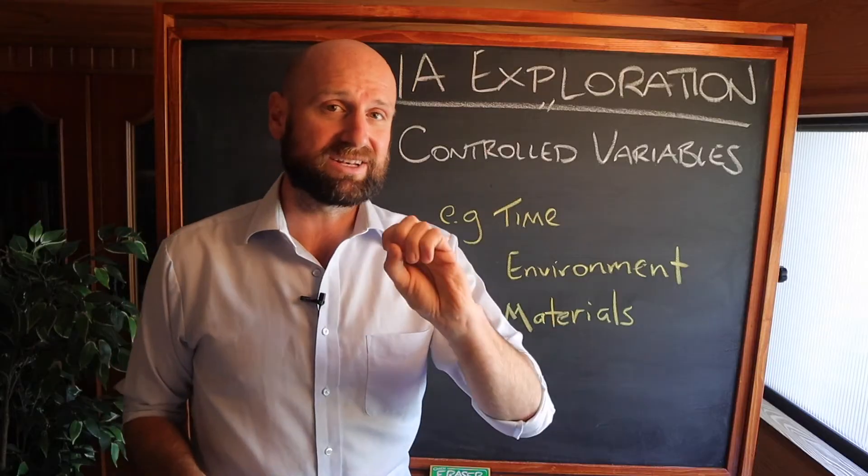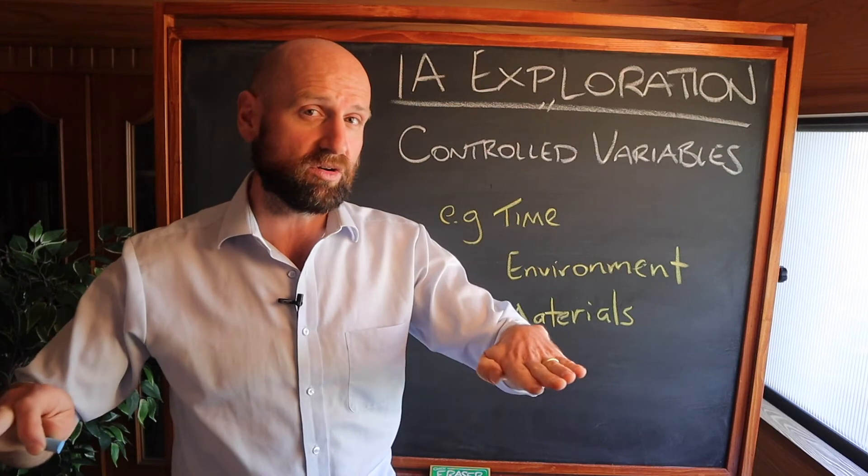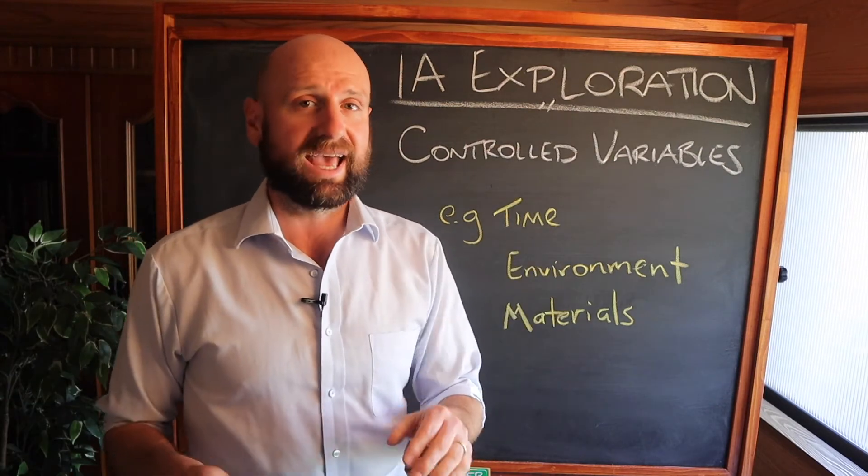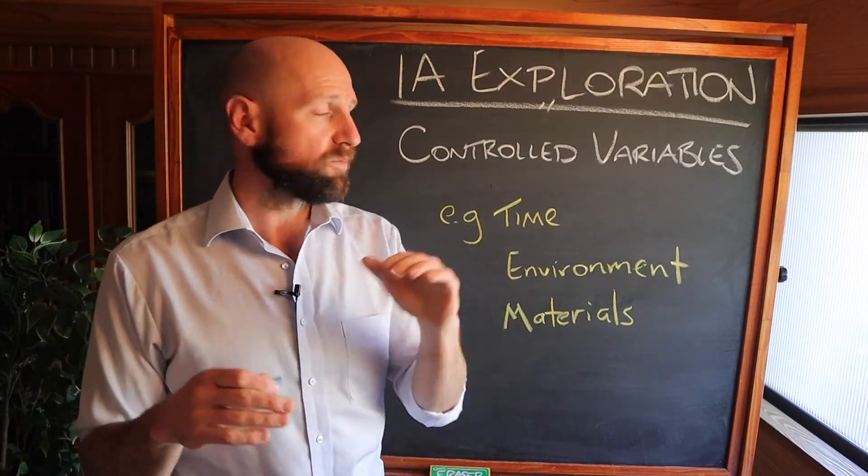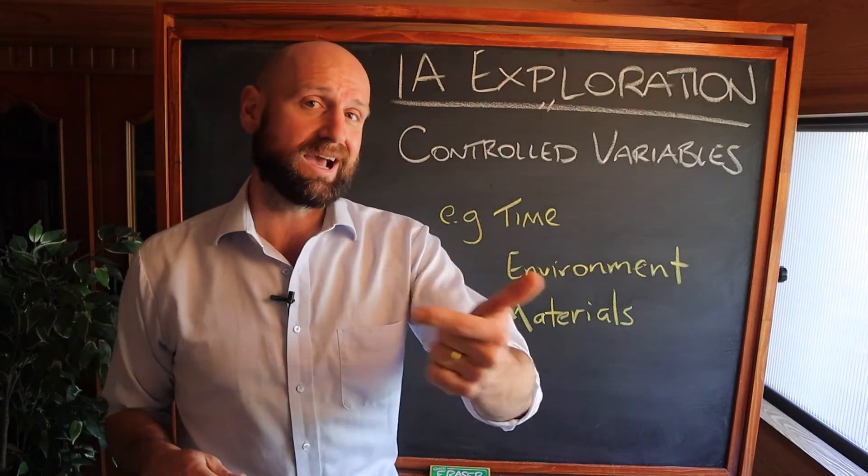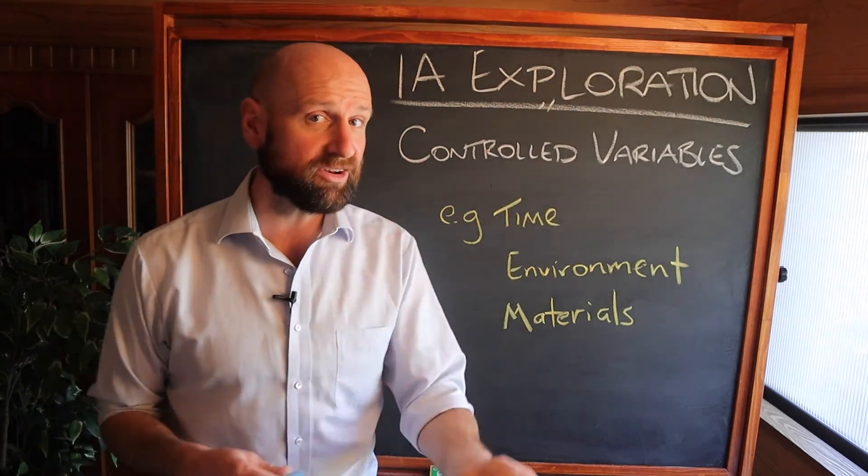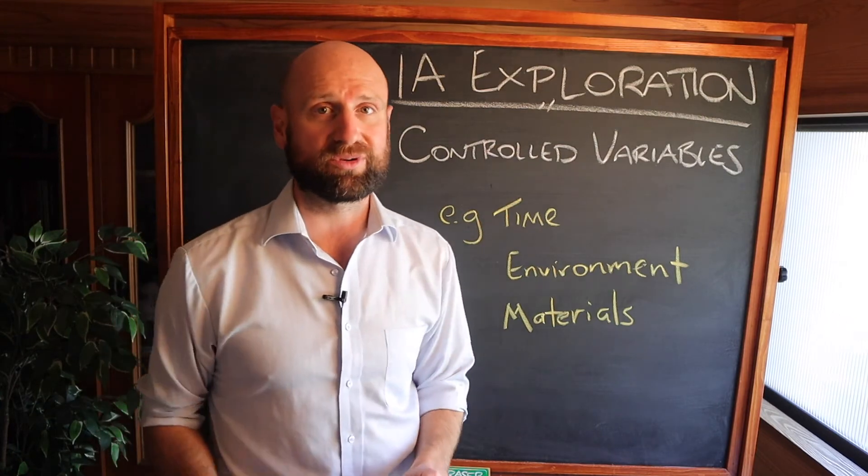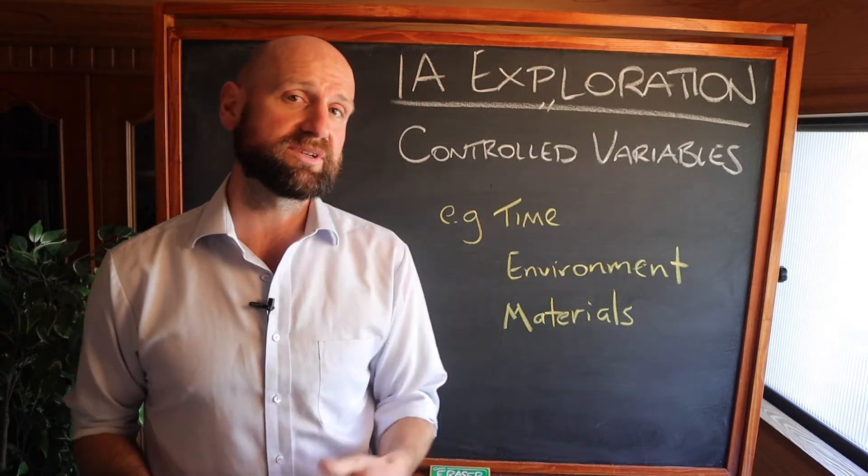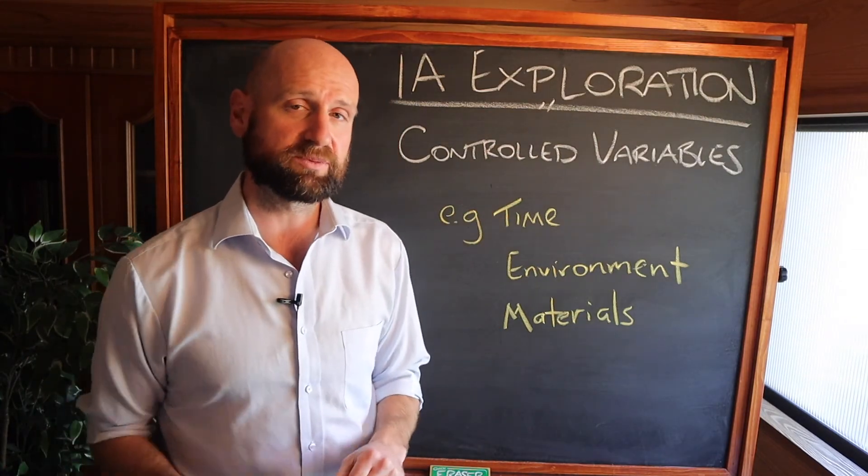But I would definitely recommend trying to find two variables that you keep constant in both conditions and explain. Now, remember, my advice is what, how, why? What were the controlled variables? How did you control them? And most importantly, why? Go through those three steps, then you'll have a really good explanation for this. And you can get top marks.